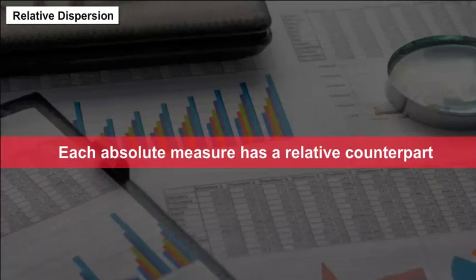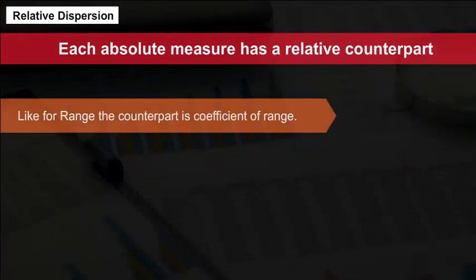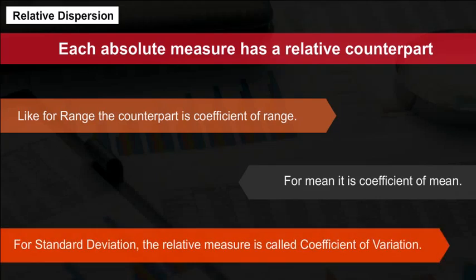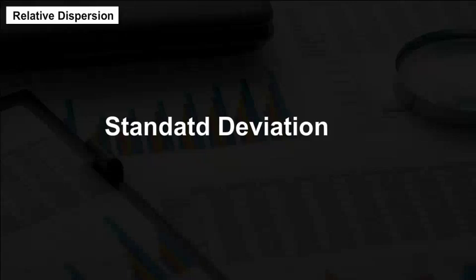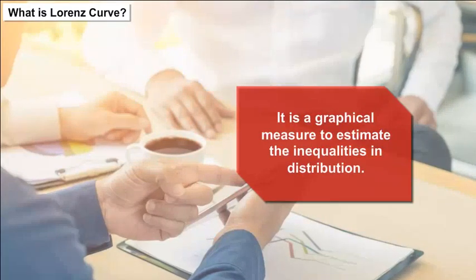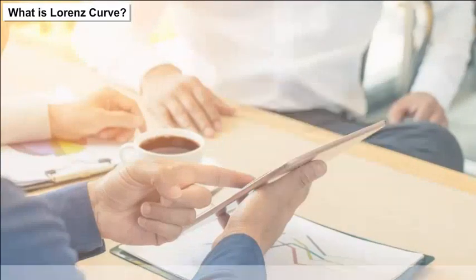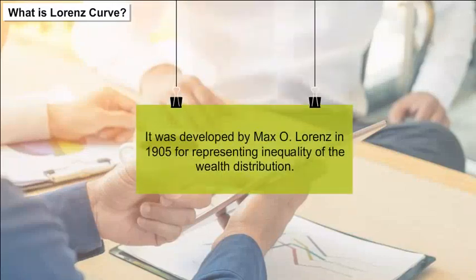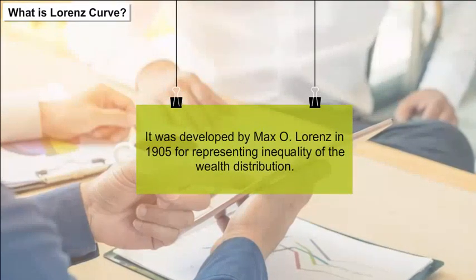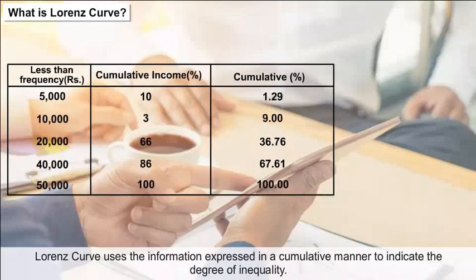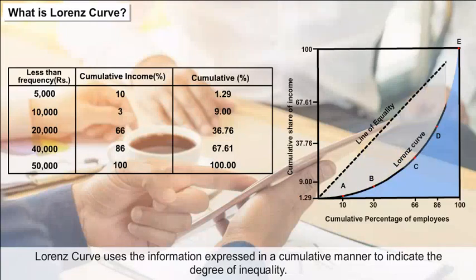Each absolute measure has a relative counterpart: for range, it is the coefficient of range; for mean deviation, it is the coefficient of mean deviation; for standard deviation, the relative measure is the coefficient of variation, calculated as (Standard Deviation / Arithmetic Mean) × 100. The Lorenz curve is a graphical measure to estimate inequalities in distribution — a graphical representation of income or wealth distribution, developed by Max O. Lorenz in 1905. It uses cumulative data to indicate the degree of inequality.